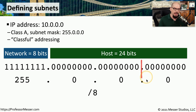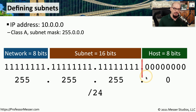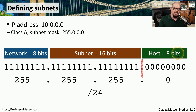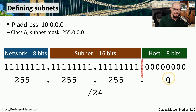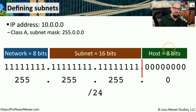For example, if we place the boundary right after the third octet, we still have our 8 network bits, but now we've created 16 new bits in the middle that are our subnet bits. This leaves us with 8 bits at the end for our host. Performing calculations on all of these bits, we can see that the subnet mask becomes 255.255.255.0, or a /24. The challenge for the network administrator is to determine where to draw that line — it is this determination of subnet bits versus host bits that helps the administrator best engineer the subnetting for their network.